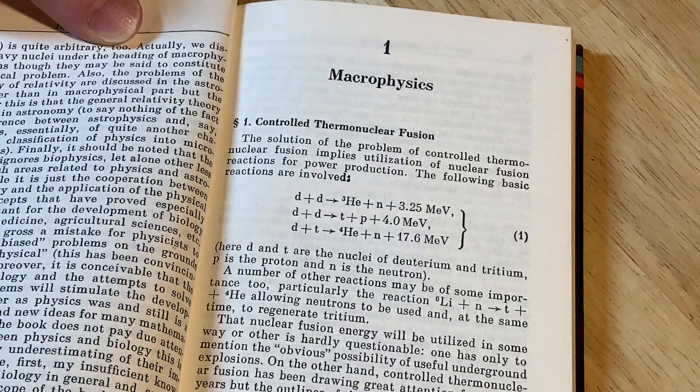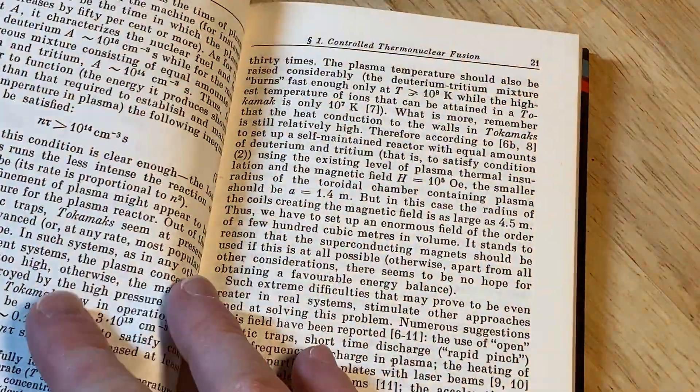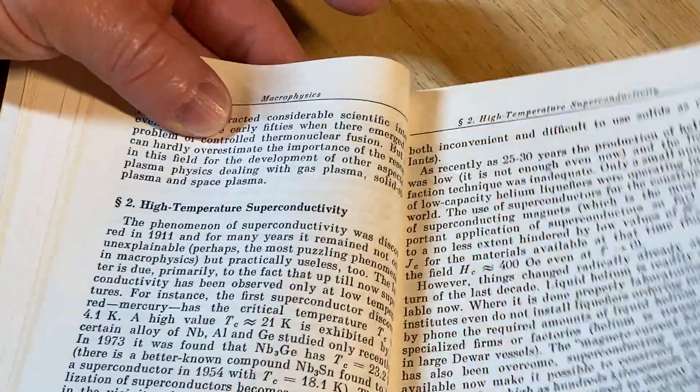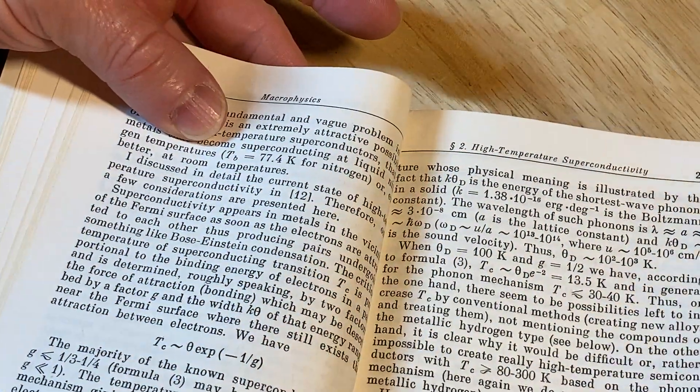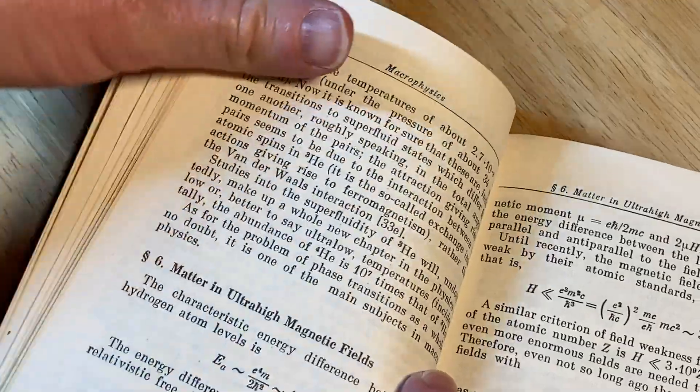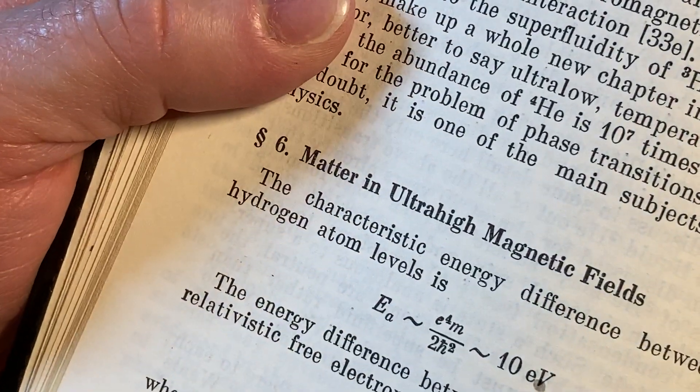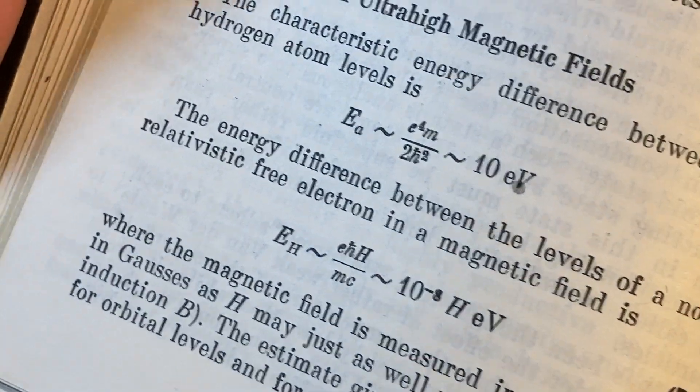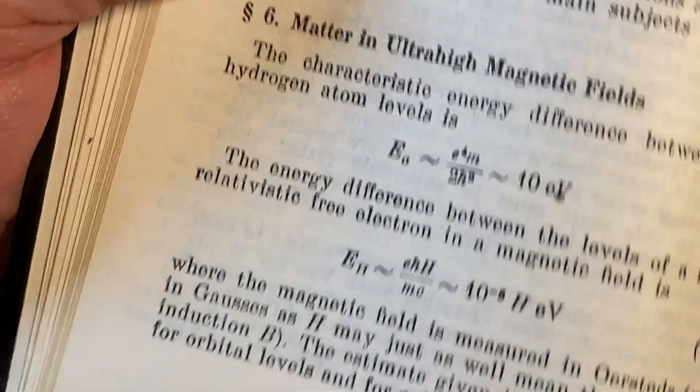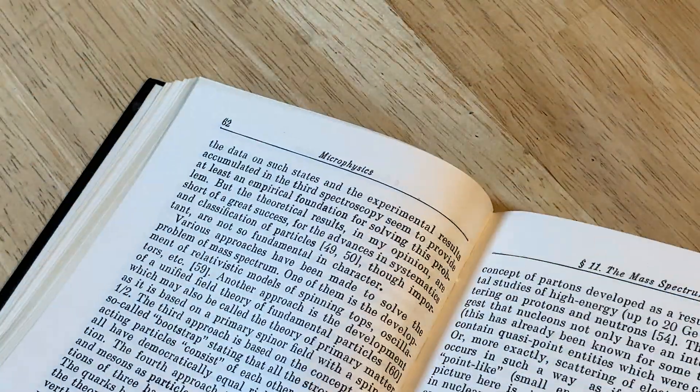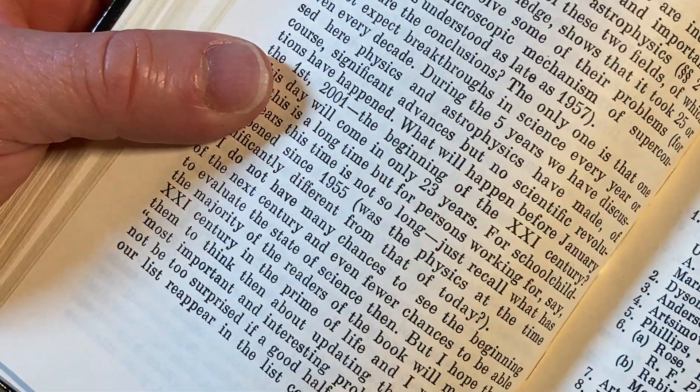Let's just glance through this so we can see the layout. It's pretty cool. High temperature superconductivity. Matter in ultra high magnetic fields. What's this? The characteristic energy difference between the hydrogen atom levels is the energy difference between the levels of a non-relativistic free electron and a magnetic field is this. The mass spectrum. Sorry, just got to give us a whiff here. This is an interesting book.